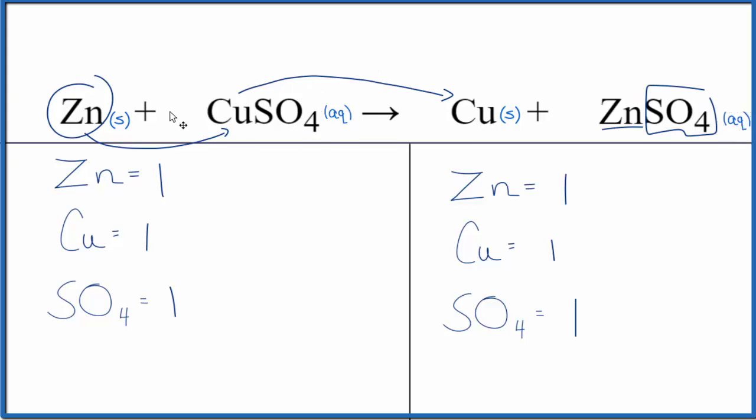So you start out with a blue solution here with the copper sulfate. You end up with a clear zinc sulfate solution and solid copper at the bottom of the beaker.